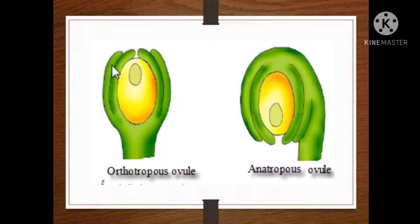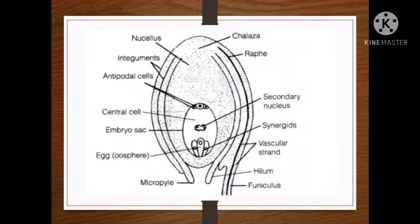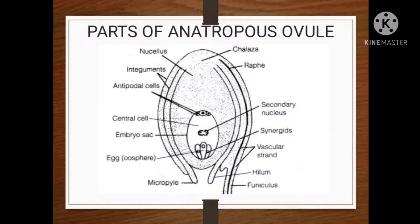The Orthotropous ovule can be seen in Polygonum and Rumex plants. In this practical, we are going to study about the Anatropous ovule in detail — that is the inverted ovule in which micropyle is directed downwards and present nearer to the funicle. The body of the ovule gets fused with the funicle along its whole length on one side, and micropyle lies close to the hilum. The Anatropous ovule has two main parts: the stalk or funicle, and the body of the ovule.